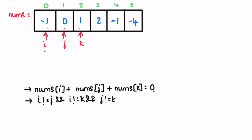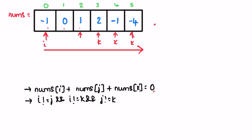k will iterate through the array, then j will move one step ahead and the process repeats. The time complexity of that brute force approach is O(n³), which will lead to a TLE — Time Limit Exceeded — error.